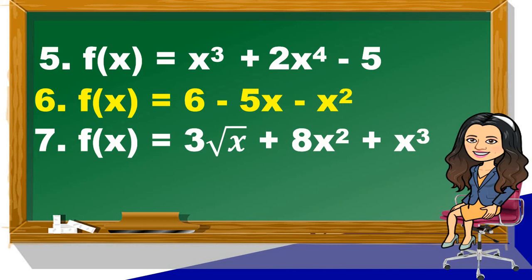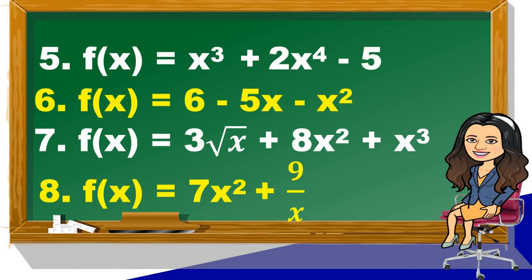Number 7: f(x) = 3√x + 8x² + x³. This is NOT a polynomial function. Why? Because if you observe the first term, the variable x is written under the radical sign. Rewriting it gives 3x^(1/2), so the exponent of x is a fraction, which makes it not a polynomial function. Number 8: f(x) = 7x² + 9/x. This is also not a polynomial function. The last term, 9/x, can be rewritten as 9x^(-1), and since the exponent is negative, it is not a polynomial function.